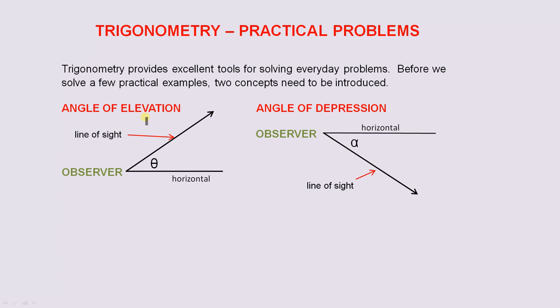The first one is the angle of elevation. Now here, let's pretend we have an observer, and here is the horizontal line. The observer's line of sight is along this line here. That means the observer is looking in an upward direction. When that is the case, this angle here, theta, is called the angle of elevation.